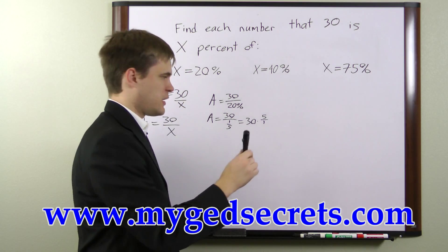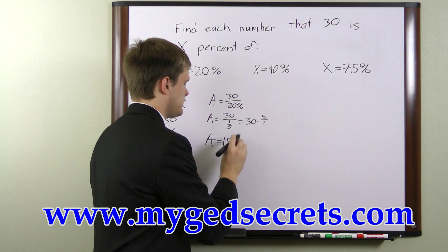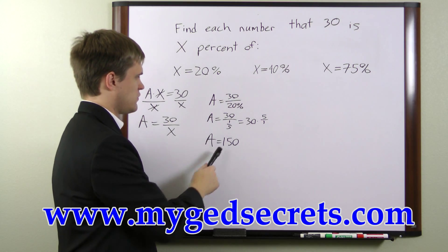If we multiply this out, we find that a equals 150. So 30 is 20% of 150.